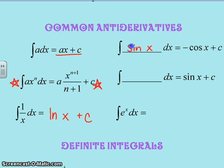If I take the derivative of sine of x, what do I get? Cosine of x. So the antiderivative of cosine of x dx gives me sine of x.